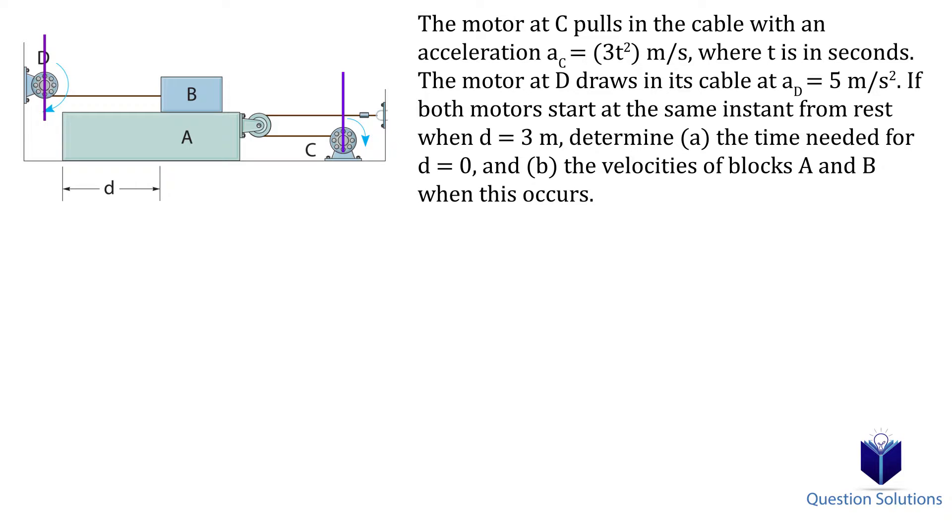We also need a point between the pulley and the motor C to represent the movement of the cable when the motor is spinning. Now for the right side we have SA and SC. For the left side we have SB.